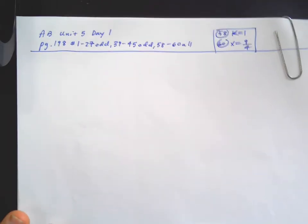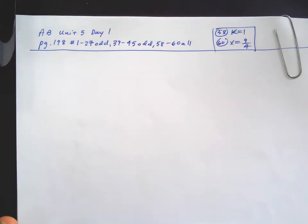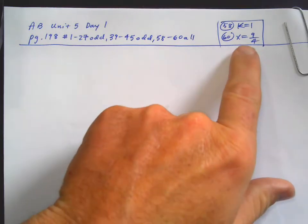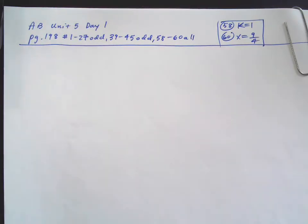Okay, AB Calculus AB, Unit 5, Day 1 Office Hours. This was the assignment. You should check your odds in the back of the book. There were two evens, which I've listed the answers there. Problem 58, k equals 1. Problem 60, x equals 9 fourths.